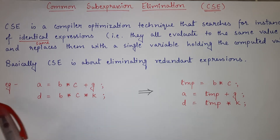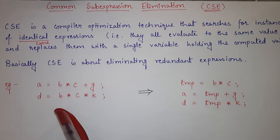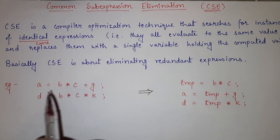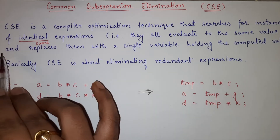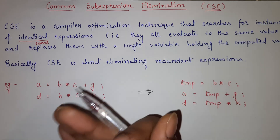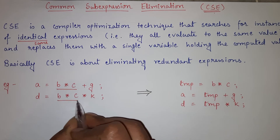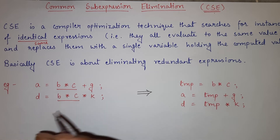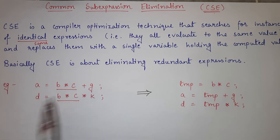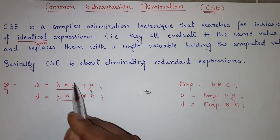You can see here in the example: A is assigned the value B*C + G, and D is assigned the value B*C*K. If you want to optimize this code with common sub-expression elimination, the first thing you need to do is search for identical expressions — any same expression coming repeatedly. Here, B*C appears in both lines, and B*C will always give the same result.